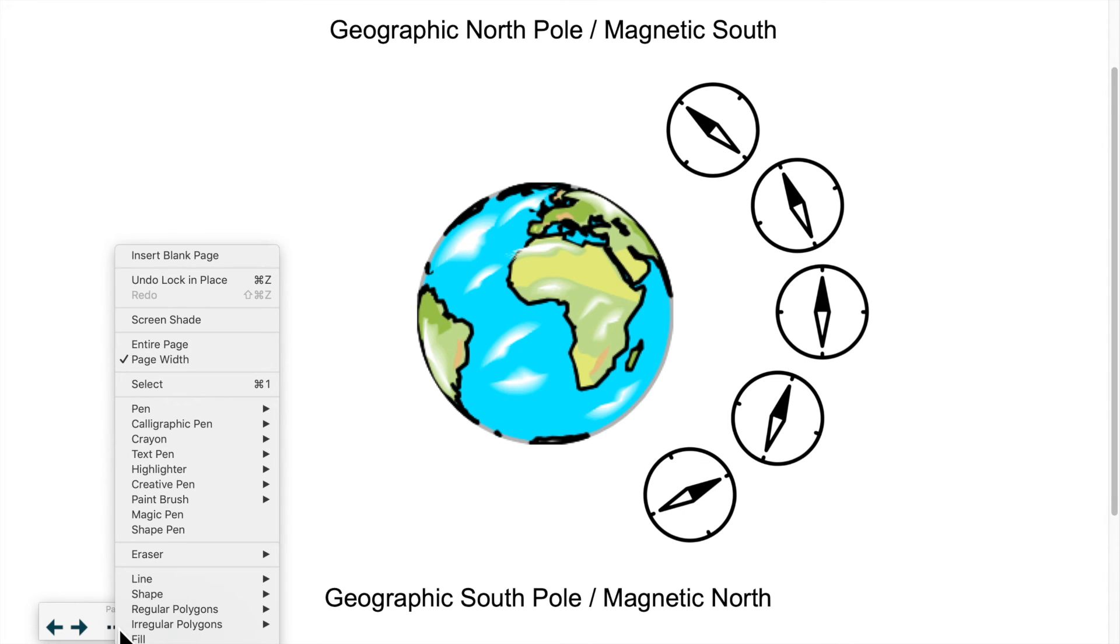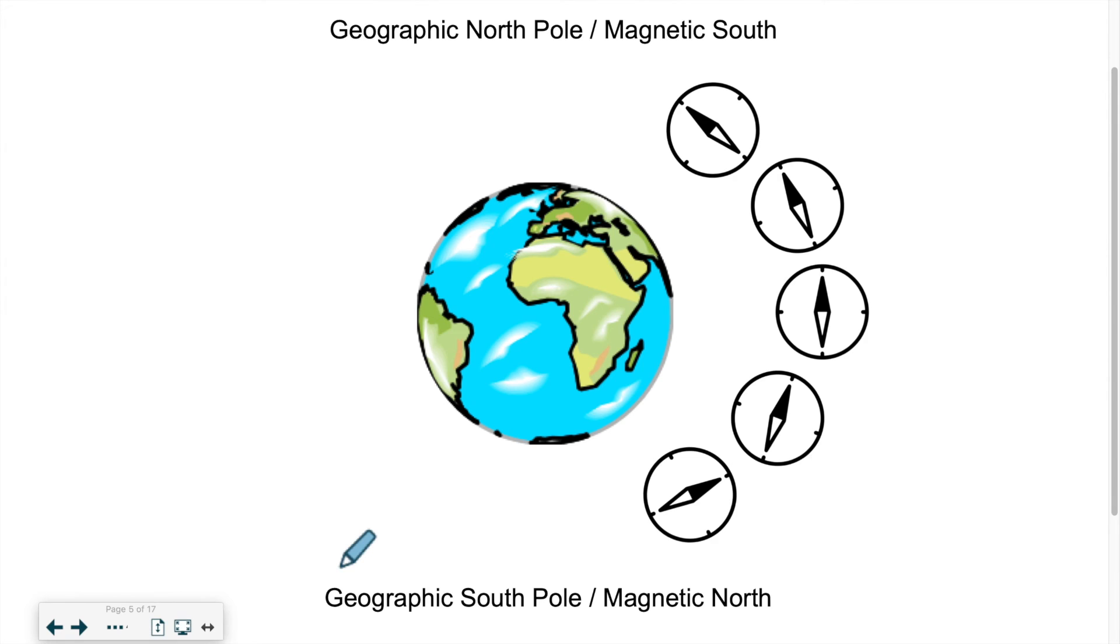Now it just so happens that the actual magnetic poles of the Earth are the opposite way. Yes, as usual, we don't always get it right the first time around. And since a lot of people are used to certain conventions, sometimes we just keep them the way they are. But in a sense, it works. I'll show you why.